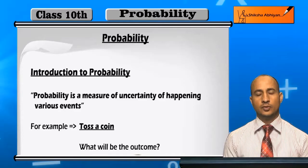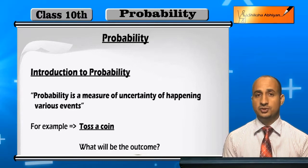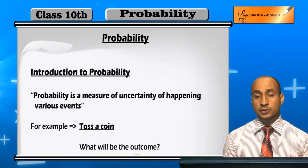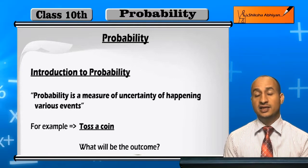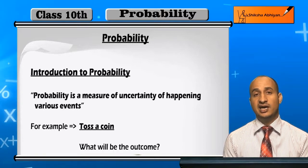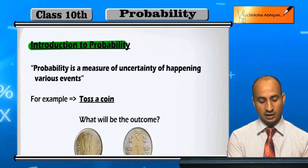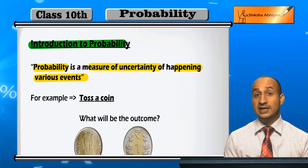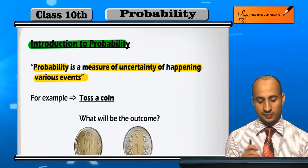First of all, your main question is: what is probability? Probability is nothing but a measure of uncertainty. How many chances are there? That is probability — just the number of chances. It is a measure of uncertainty of an event happening — how many chances are there? That is what probability measures.